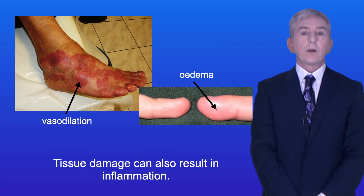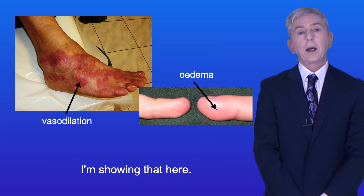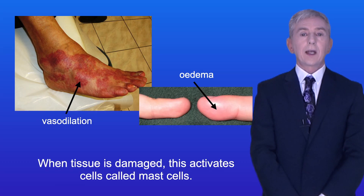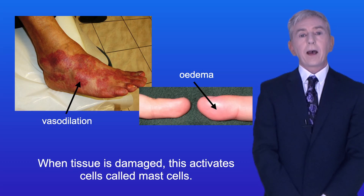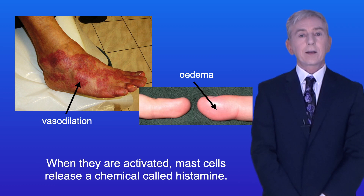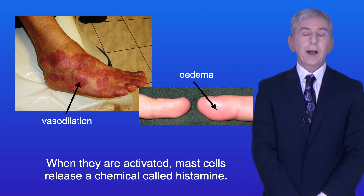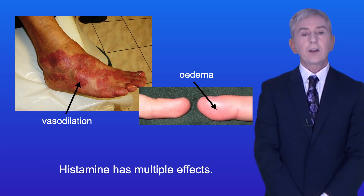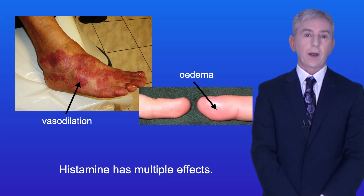Tissue damage can also result in inflammation, and I'm showing that here. When tissue is damaged this activates cells called mast cells. When activated, mast cells release a chemical called histamine, and histamine has multiple effects.